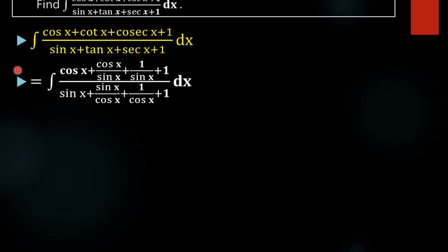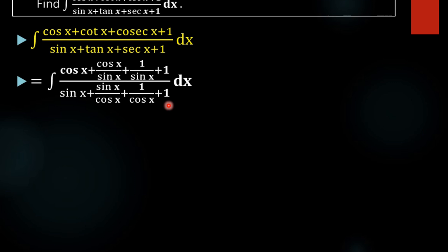The first term in the numerator is cosx. Cotx is cosx/sinx, cosecx is 1/sinx, and 1 is 1 itself. In the denominator: sinx is sinx, tanx is sinx/cosx, secx is 1/cosx, and 1 is 1 itself.